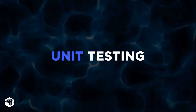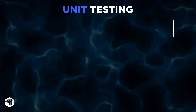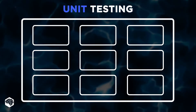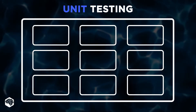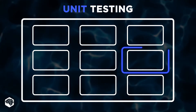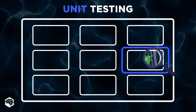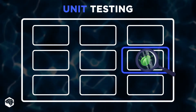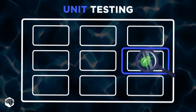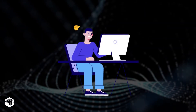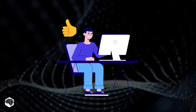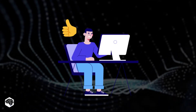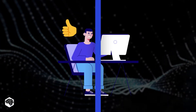Unit testing is concentrated on one part of the entire app in total isolation. Usually, it's a single class or function. Ideally, the unit does not have any side effects. You develop a new feature, and you test this feature.